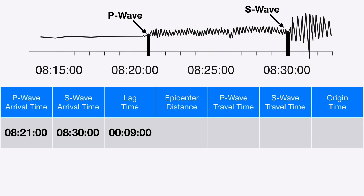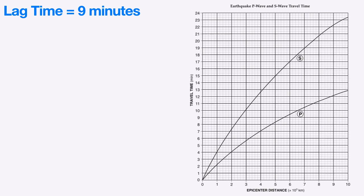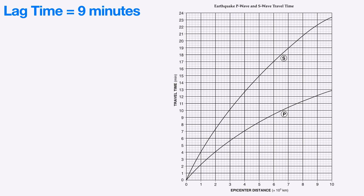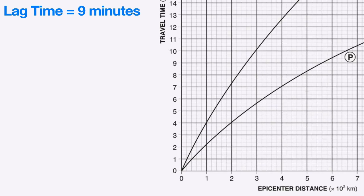Once we have that piece of information, we can figure out how far we are from the earthquake's epicenter, which is a valuable piece of information. To do this, we keep in mind that we have a lag time of 9 minutes, and we go grab our P wave and S wave travel time chart found in our Earth Science reference tables. I'm going to walk you through this process, which we call the wedge method.